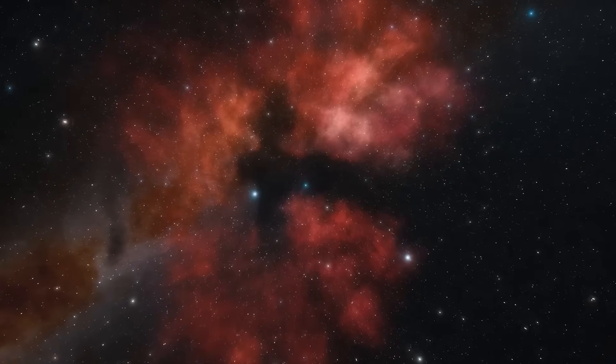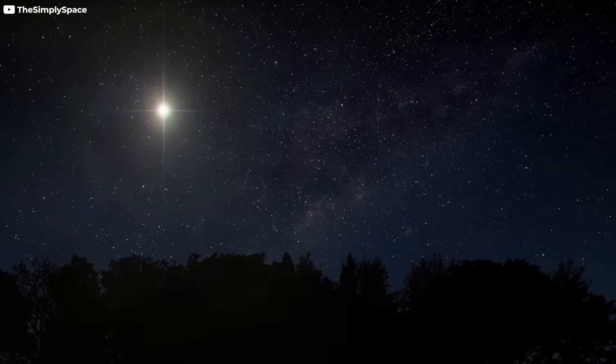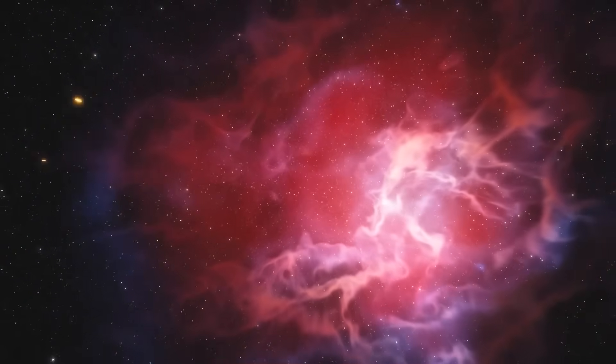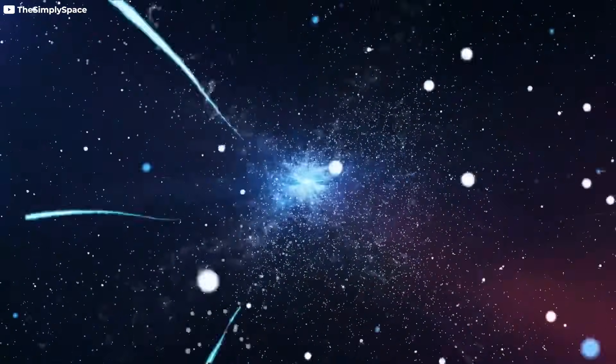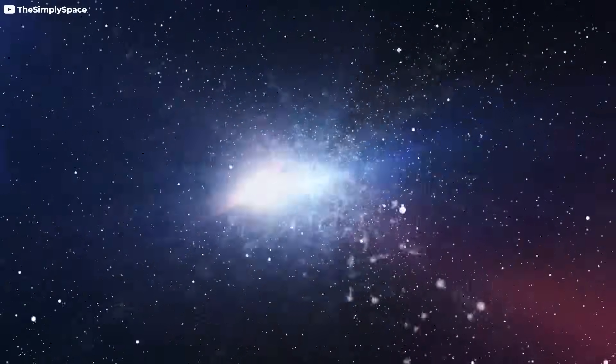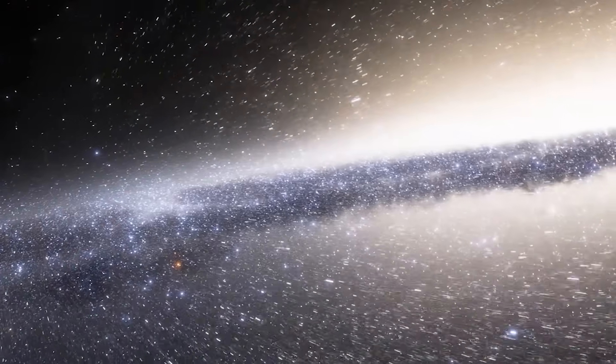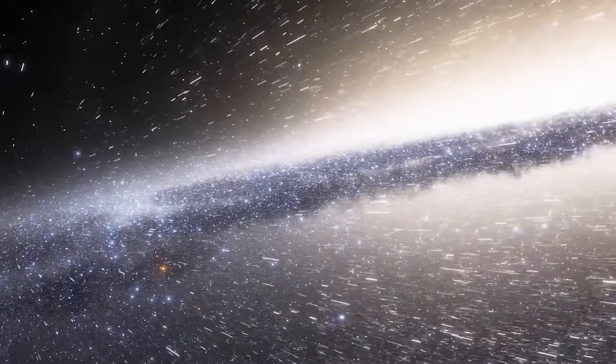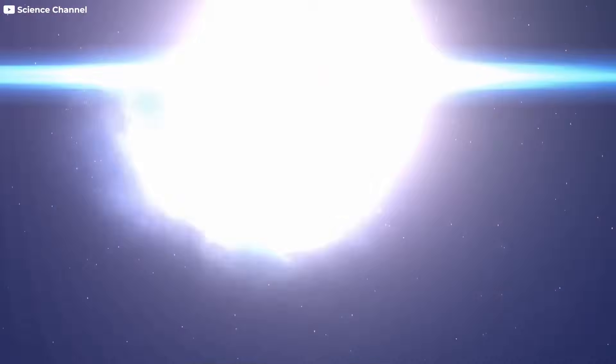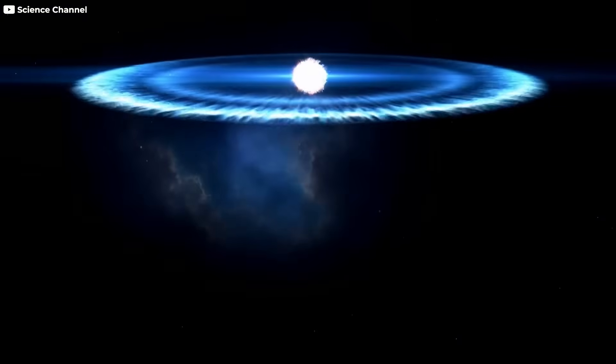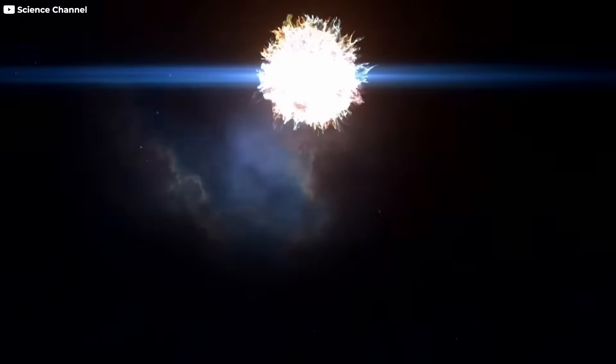The distribution of these elements is not random. As the shock waves of the supernovae travel through space, they seed the surrounding gas and dust clouds, enriching them with the materials necessary for future generations of stars and planets to form. This process is what fuels the cycle of stellar birth and death. Stars are born, they burn out, and then they explode, leaving behind the very elements that will one day create new worlds.